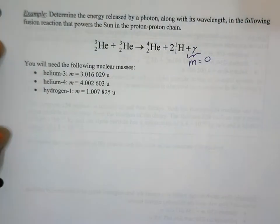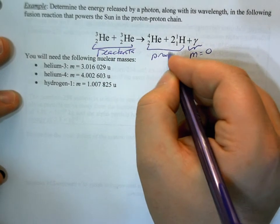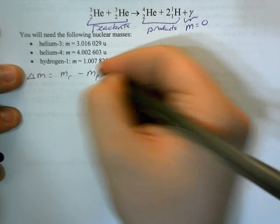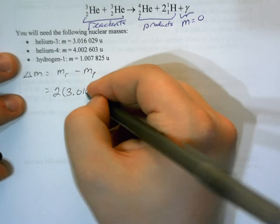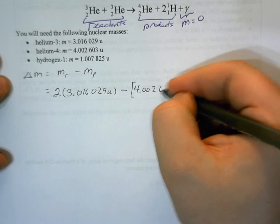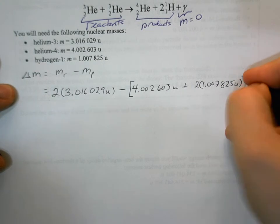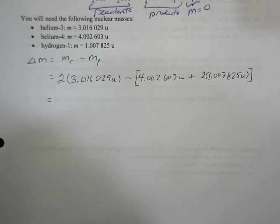The gamma photon has no mass so it does not contribute to the mass defect. The reactants are on the left side, products on the right. The mass defect is reactants minus products. For the reactants we have two helium-3 nuclei: 2 × 3.016029 u. From that we subtract helium-4 at 4.002603 u and two hydrogen nuclei (protons) at 2 × 1.007825 u.